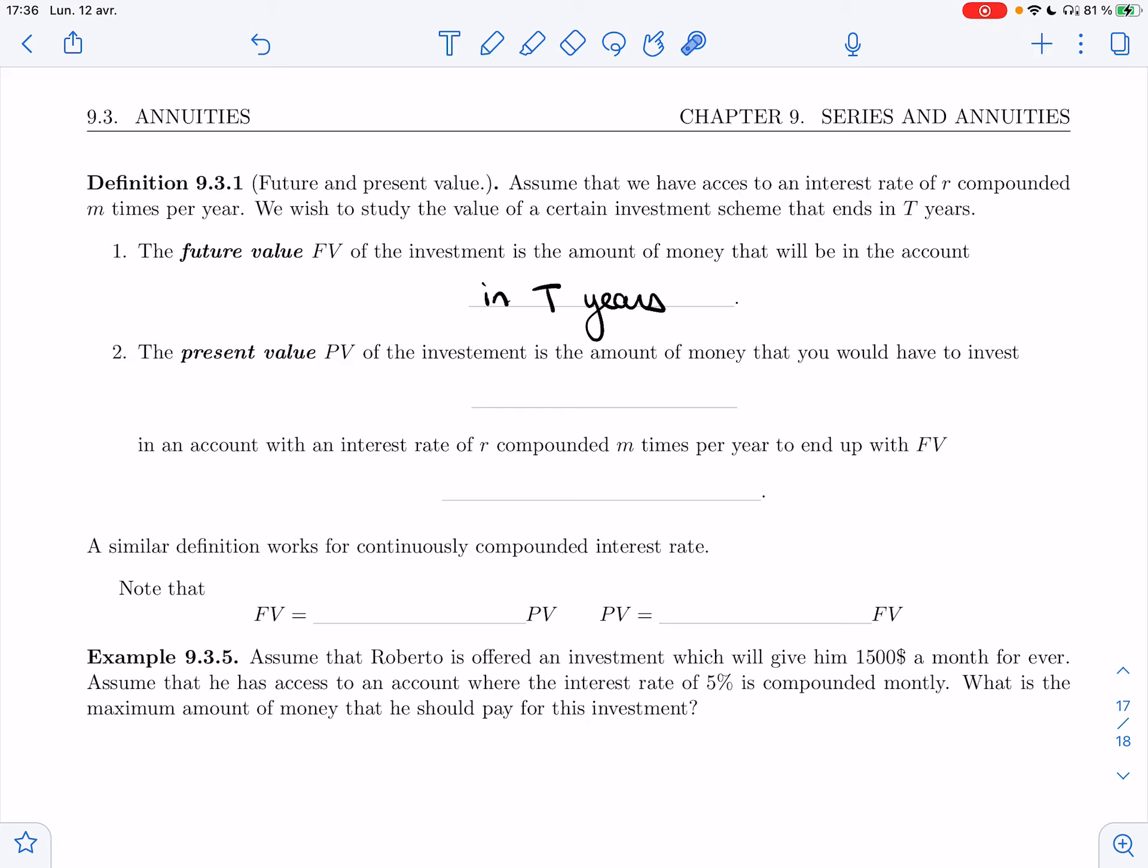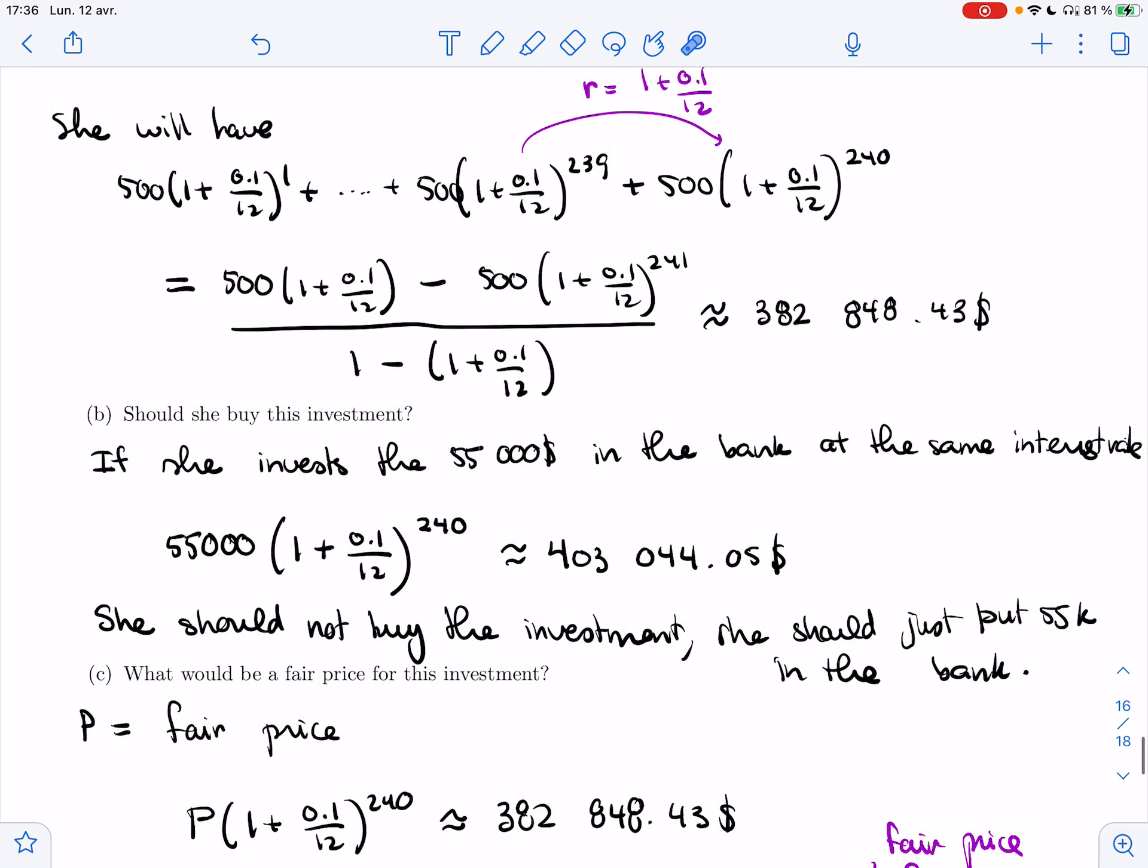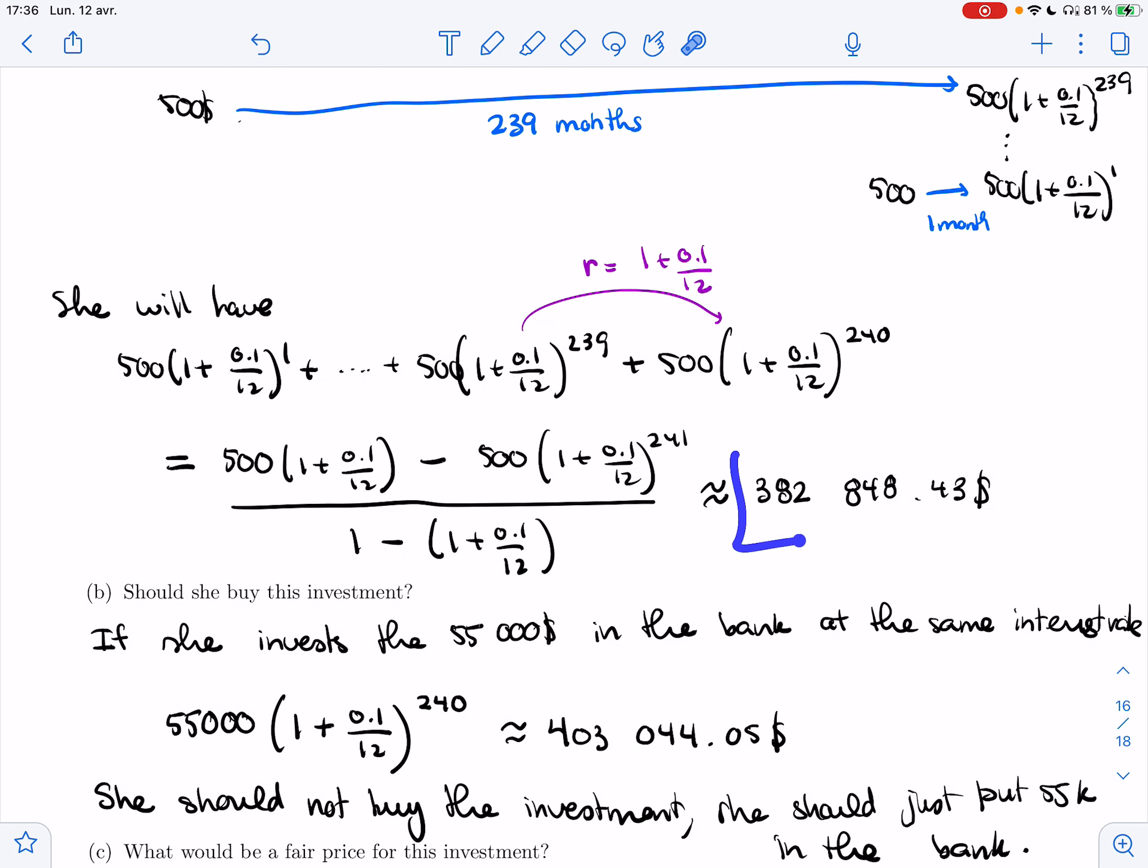So that's how much money will actually be in the account. So this is a very concrete number. In the last example, the future value would be this $382,000.